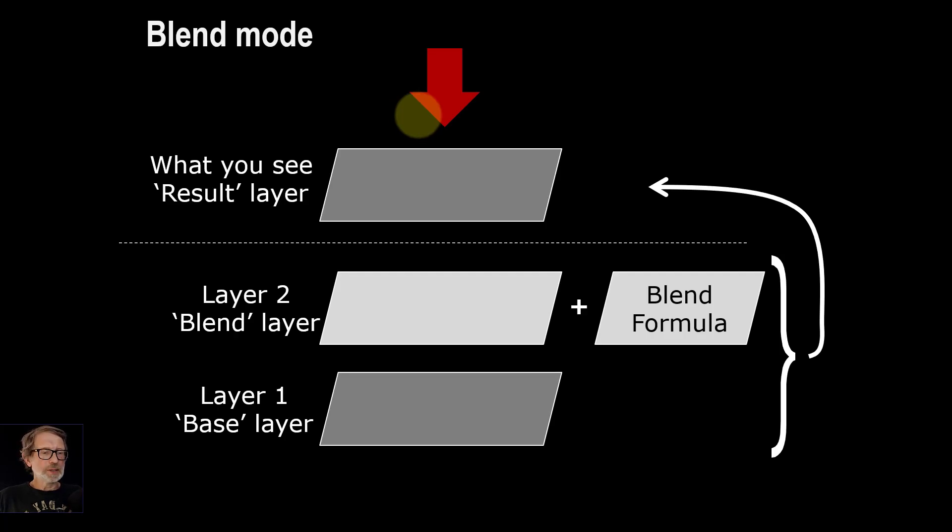So what we can see is that when we start off blending, just as a quick reminder, we start off with the base layer, we add a blend layer on top, and then there's a formula which is the blend mode and that's where the calculation is defined, and that leads us to what we see in the end with the result.